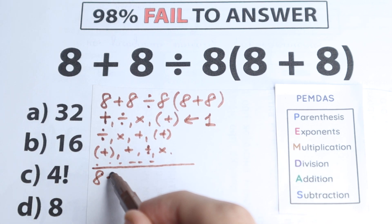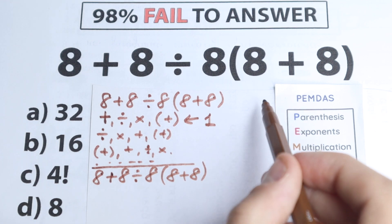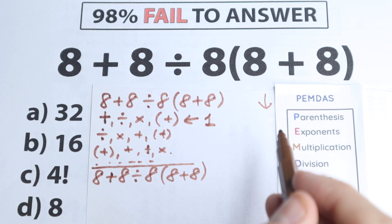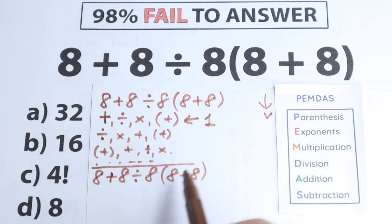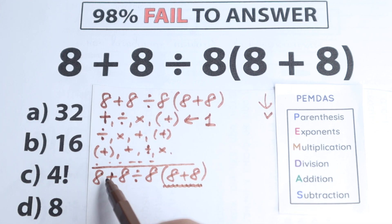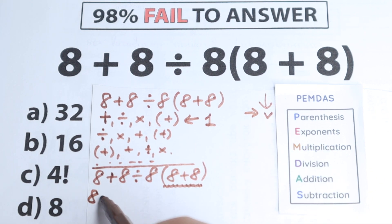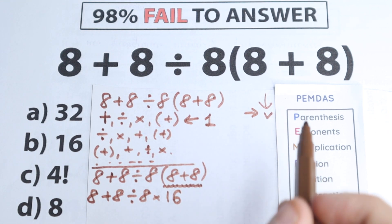We have 8 plus 8 divided by 8, and in parentheses 8 plus 8. PEMDAS works from the top to the bottom. First step: parentheses. We have parentheses here, so we need to start with them. Everyone knows 8 plus 8 equals 16. We completed this first step — that's great!